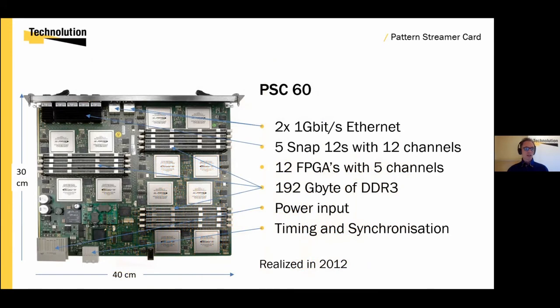This is the PSC60, the workhorse of the machine, which processes these pixels. This card can do that for 60 of the 13,000 channels that we were talking about. So we need a lot of these FPGAs. For the first machine Mapper made, which was only one wafer per hour machine, we could still fit everything in one 19-inch cabinet together with the hard disks storing the data.